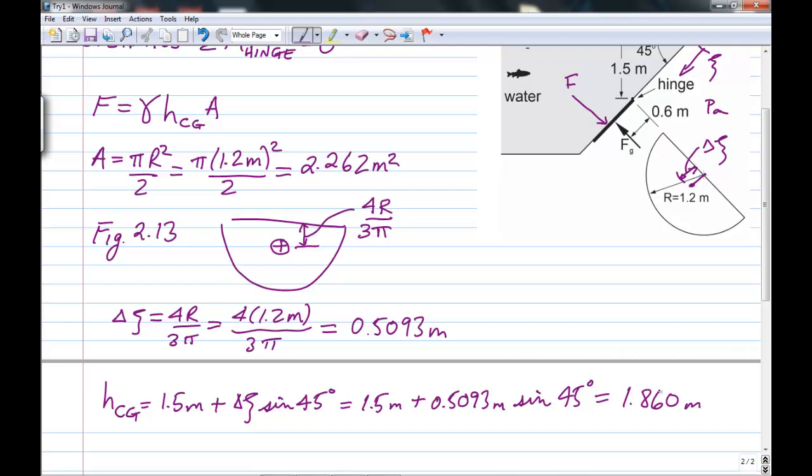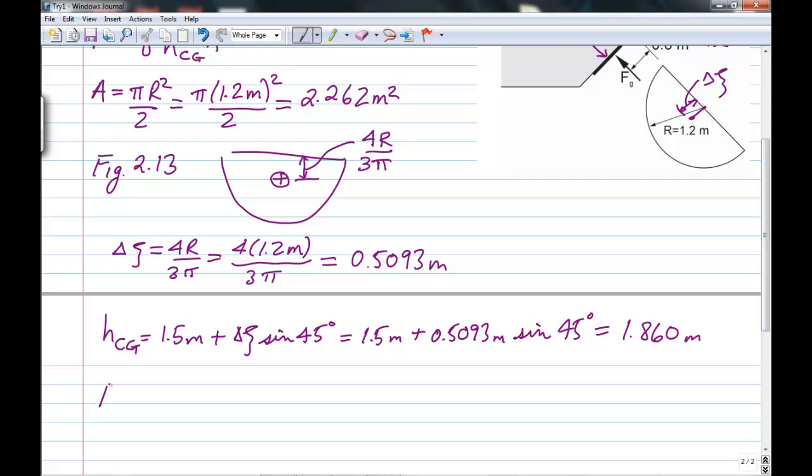Now we can calculate the force. We have everything necessary. The resultant force is using gamma hc, gamma h times the center of gravity times A. I'm going to use for water, for fresh water, a round number of 9,800 newtons per cubic meter. The depth of the centroid is 1.860 meters. And the area of the gate we calculated up here which is 2.262 meters squared. And that works out to 41.23 kilonewtons. So that's the force.